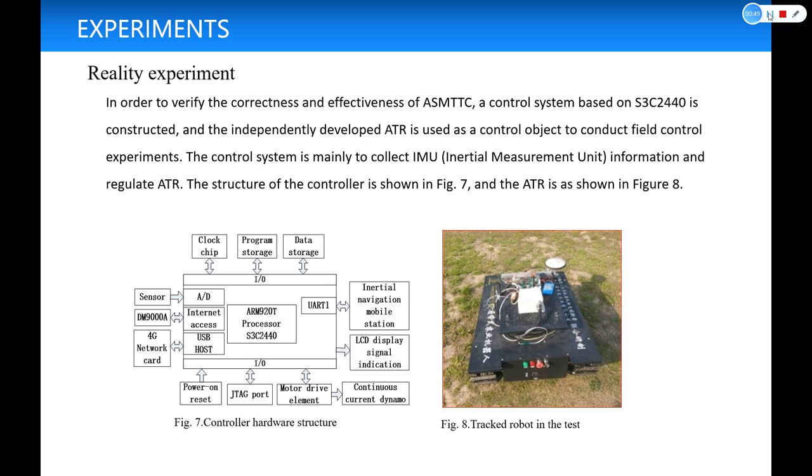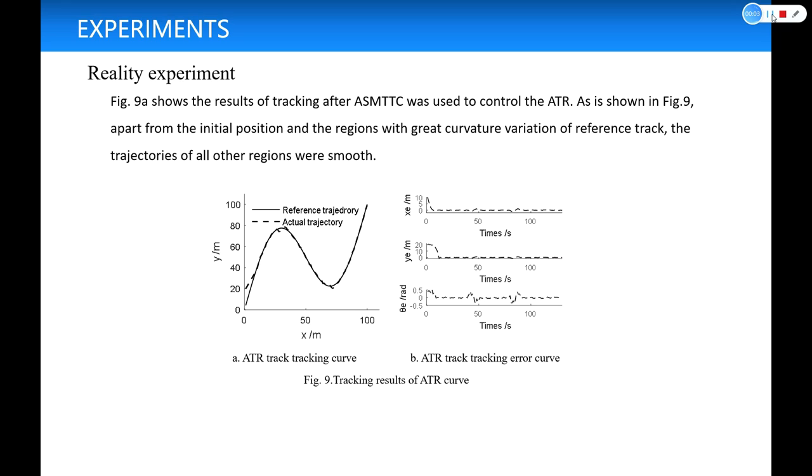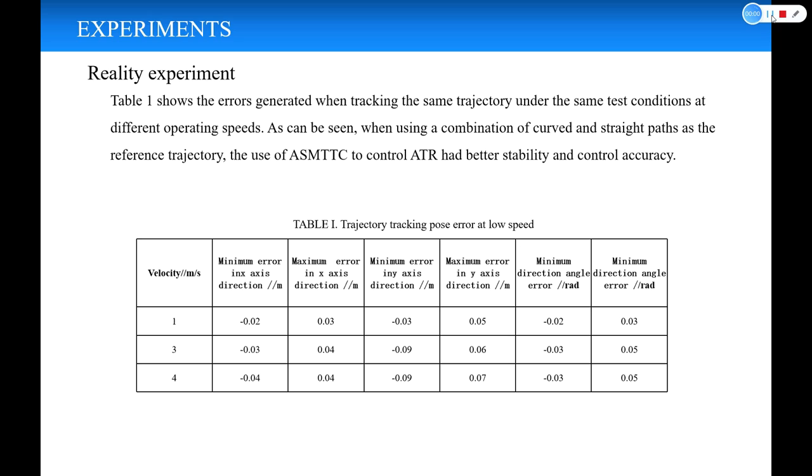Figure 9a shows the results of tracking after ASMTTC was used to control the ATR. As is shown in Figure 9, apart from the initial progression and the turnings with greater curvature variation of reference track, the trajectories of all other segments were smooth. Table 1 shows the errors generated when tracking the same trajectory under the same test conditions at different operation speeds. As can be seen, when using a combination of straight and curved paths as the reference trajectory, the use of ASMTTC to control ATR had better stability and control accuracy.